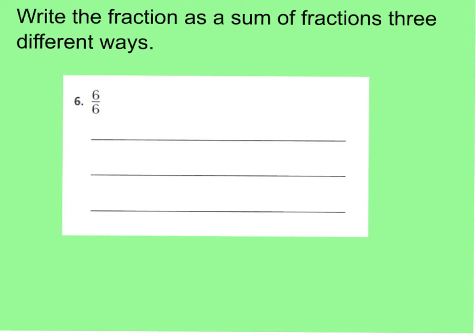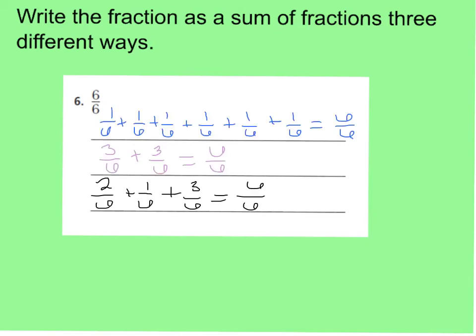Number six also asks you to write the fraction as a sum of fractions three different ways. For six-sixths, pause the video and press play when ready. Here are some possibilities: one-sixth added six times equals six-sixths. Three-sixths plus three-sixths equals six-sixths. Two-sixths plus one-sixth plus three-sixths also equals six-sixths. As long as your fractions add up to six-sixths, you're good.